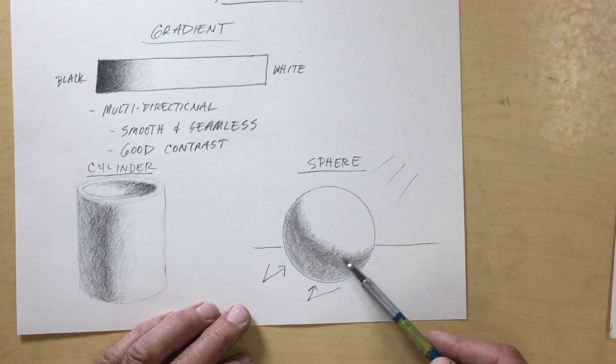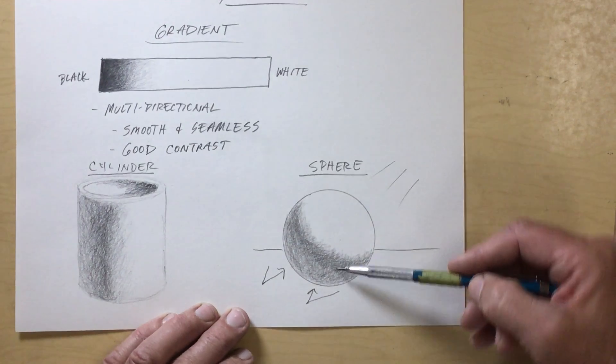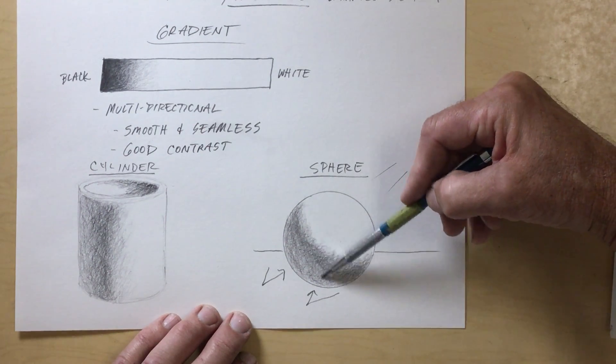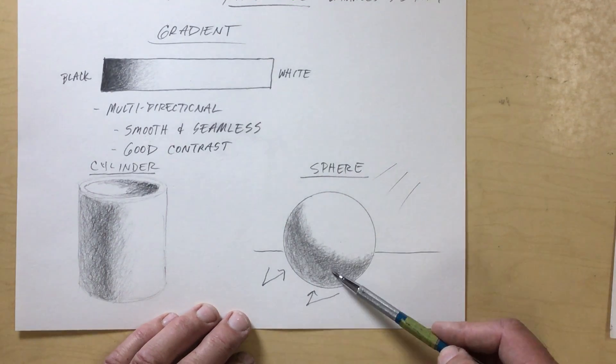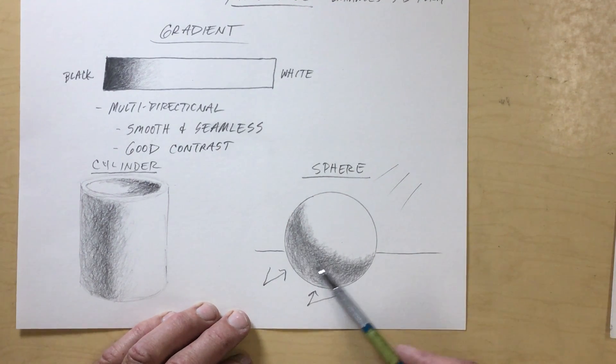And then you just kind of keep working that again multi-directionally. I keep changing my direction of my strokes because it really helps to blend it in. No finger shading.